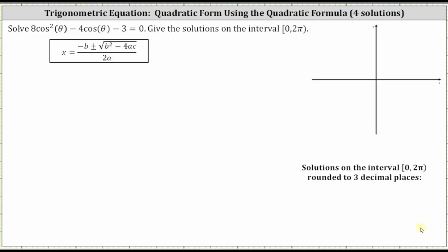We're asked to solve the trig equation in quadratic form and give the solutions on the interval from zero to two pi, where the interval is closed on zero and open on two pi. We're also told to round the final solutions to three decimal places. The equation is in quadratic form and is not factorable, so we have to apply the quadratic formula in order to solve.